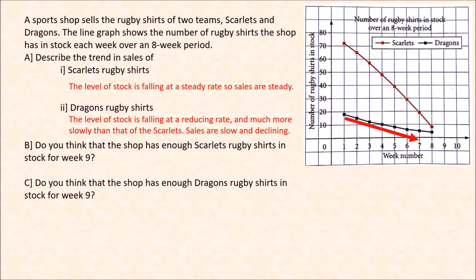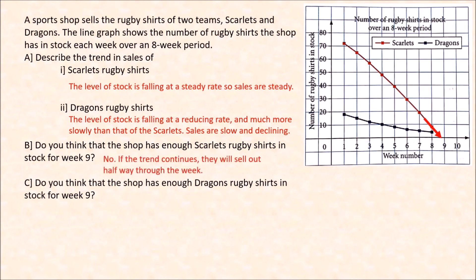In week 1 they have a bigger rate of sale compared to weeks 7 and 8 — that's what reducing rate means. They sell faster in the beginning and it becomes slower and slower as they reach weeks 6, 7, and 8. Now, do you think the shop has enough Scarlet rugby shirts in stock for week 9? If the trend continues at a steady rate, the line will reach the x-axis — zero stock — before week 9. So no, they will sell out halfway through the week before reaching week 9.